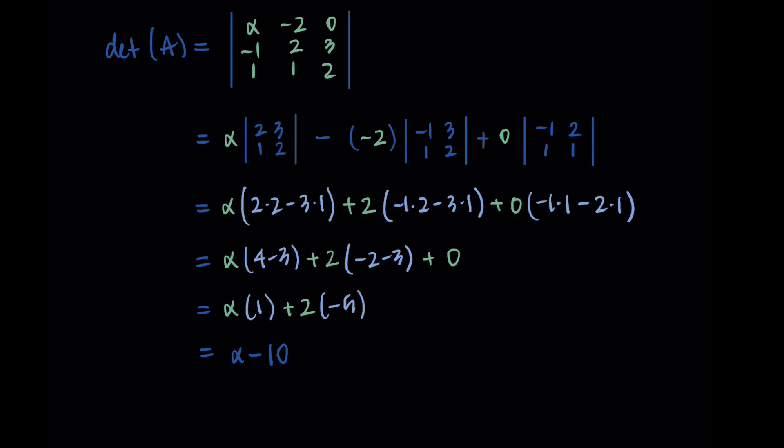Alpha is our unknown value, and we got alpha minus 10 as the determinant. So if this matrix has an inverse, we need this value to not be zero. But we've been asked to find the value of alpha such that there is no inverse, such that it's a singular matrix. And so we want to set the determinant equal to zero.